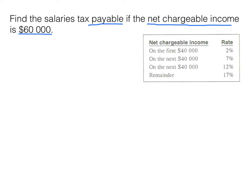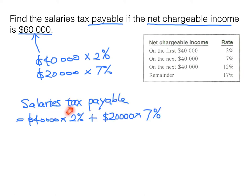Since the net chargeable income is $60,000, we simply split it into two parts. On the first $40,000, the rate is 2%. And then for the remaining $20,000, the rate will be 7%. Therefore, the salary tax payable will be $40,000 times 2% plus $20,000 times 7%.